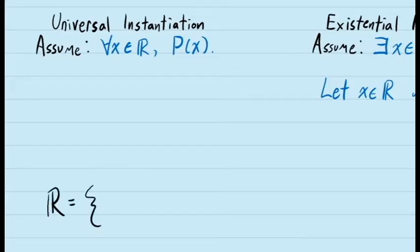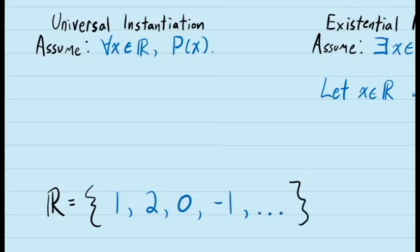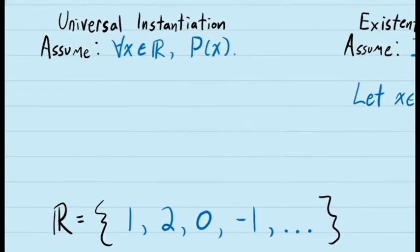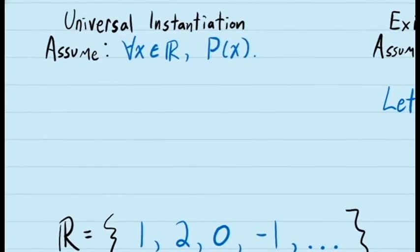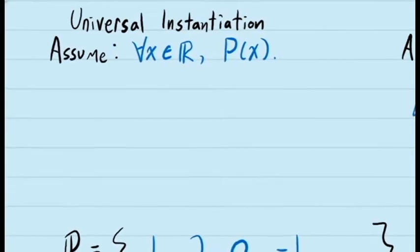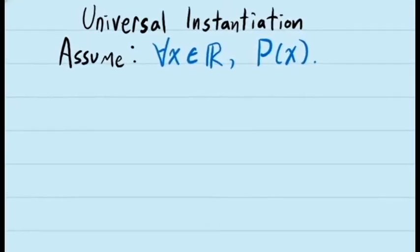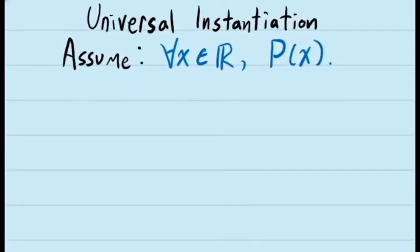In other words, it holds for 1, it holds for 2, it holds for 0, negative 1, any real number you can think of. And so, an assumption like this allows us to do much more than simply talk about an arbitrary unknown value of x. It allows us to talk about whatever specific value or values we choose to assign to x.